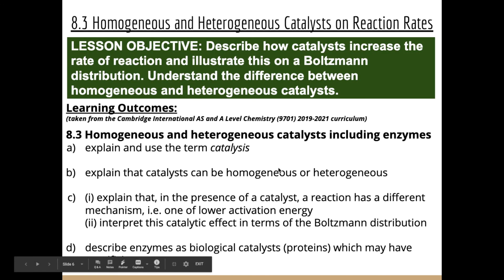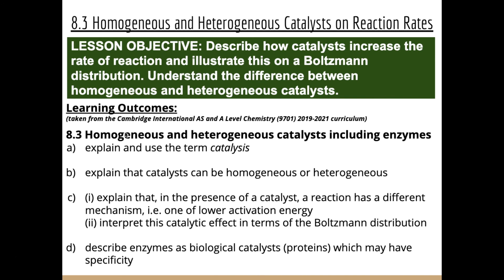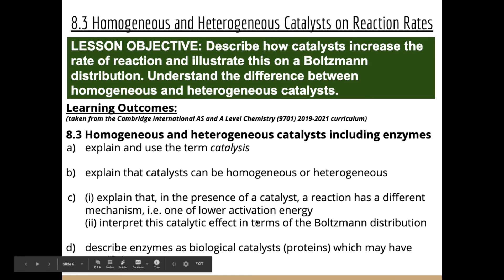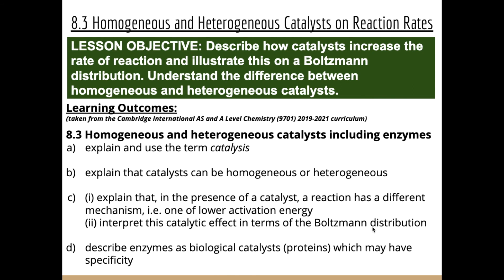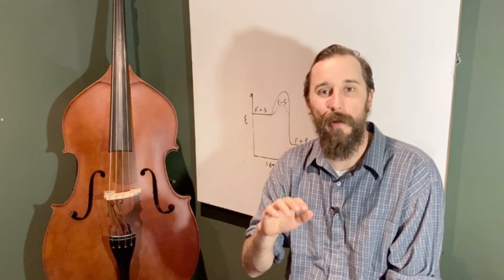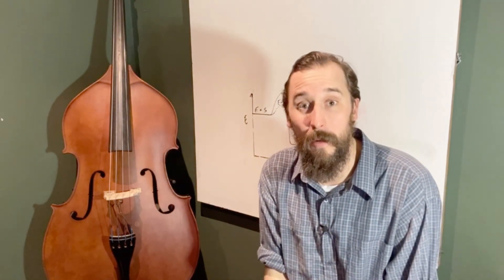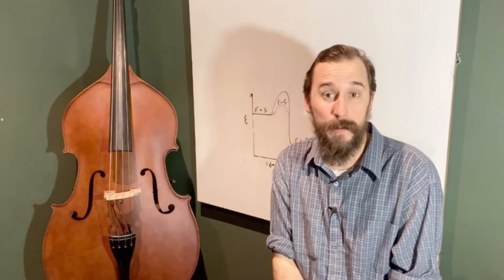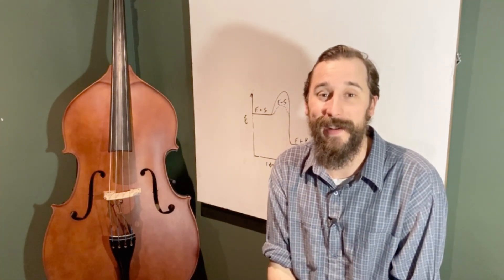That's a biological application of catalysts, and with that we have finished the unit on reaction kinetics. We've explained and used the term catalysis, explained that catalysts can be homogeneous or heterogeneous, explained that in the presence of a catalyst a reaction follows a different mechanism, interpreted this catalytic effect in terms of the Boltzmann distribution, and described enzymes as biological catalysts — also called proteins — which may have specificity. That concludes not only our unit on reaction kinetics but also this series in physical chemistry. Thanks for your time and good luck.